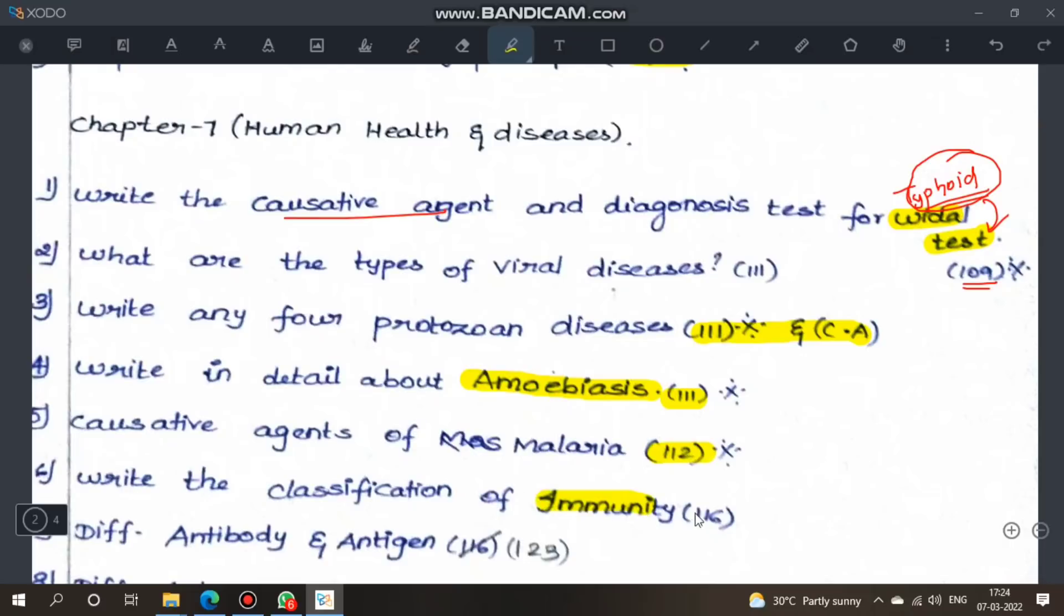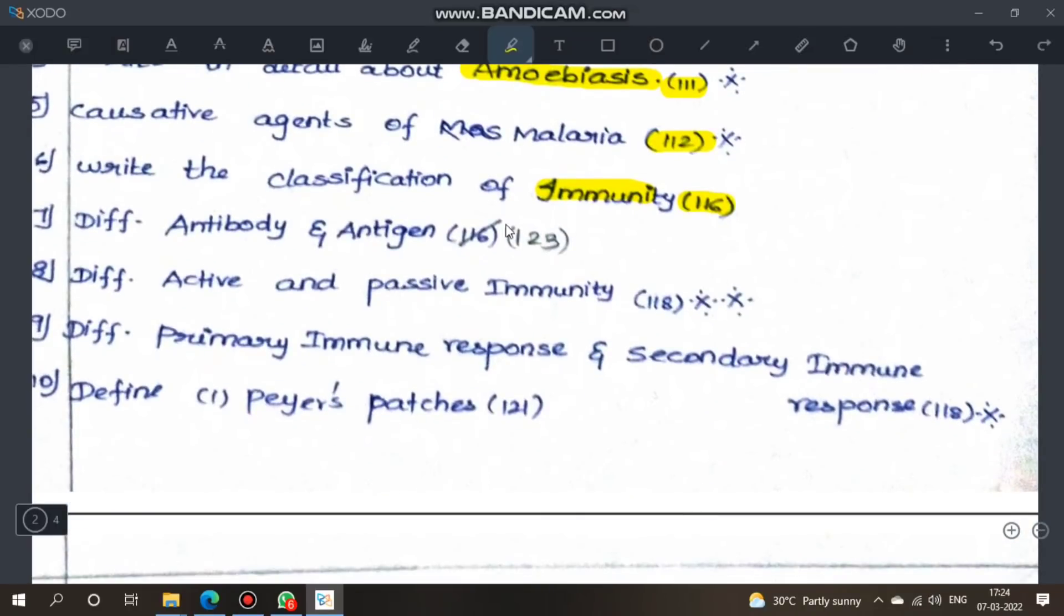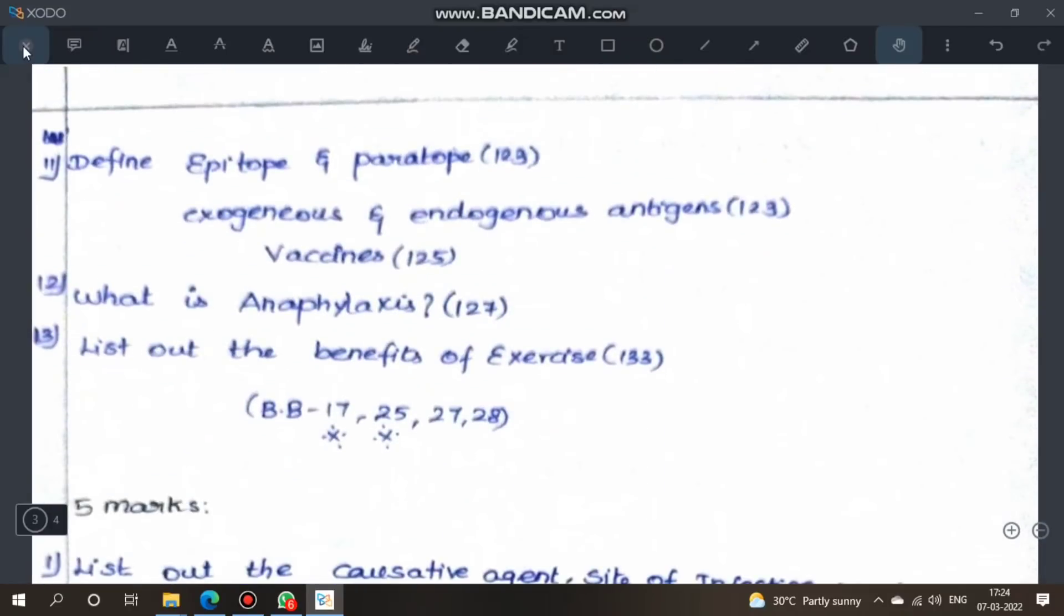Next, write the classification of immunity, flowchart, page 116. Differentiate antibody and antigen, page 123. Differentiate active and passive immunity, very very important, page 118. Differentiate primary immune response and secondary immune response, page 118, important. These differences are important. Define Peyer's patches, page 121. Define epitope and paratope, page 123. Exogenous and endogenous antigens, page 123. Define vaccines, page 125. What is anaphylaxis, page 127, important question. List out the benefits of exercise. Book questions 17, 25, 27, 28. Questions 17 and 25 are very important.